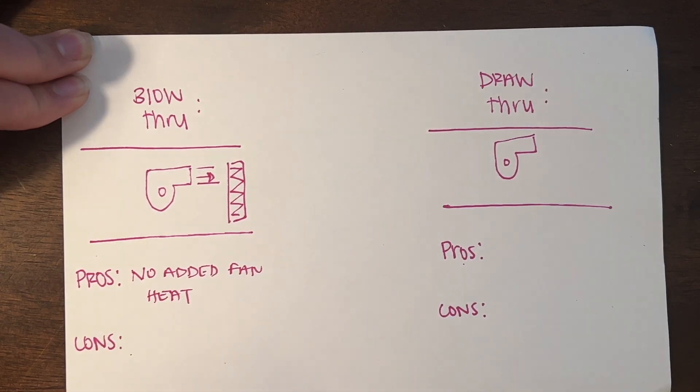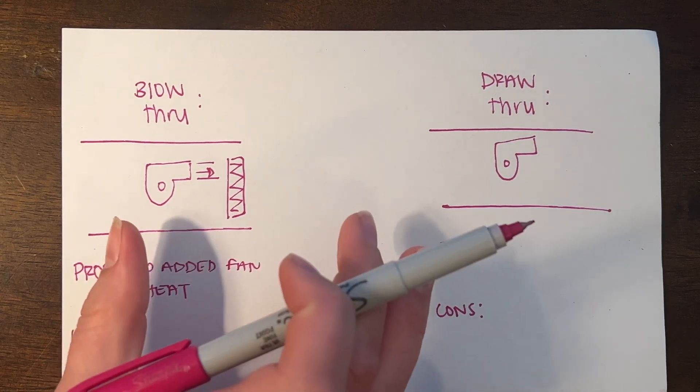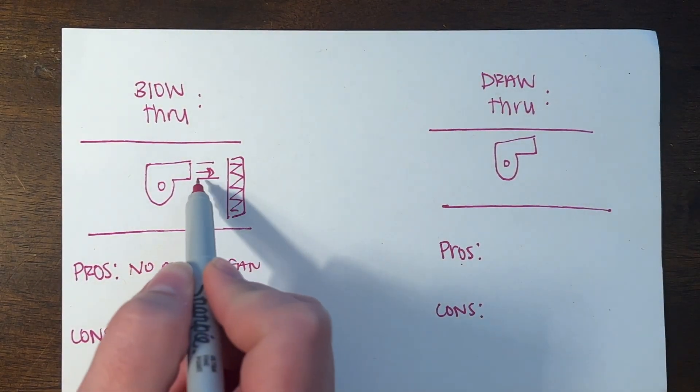The problem with utilizing blow throughs is you have to make your air handling units longer so that you don't get uneven airflow.